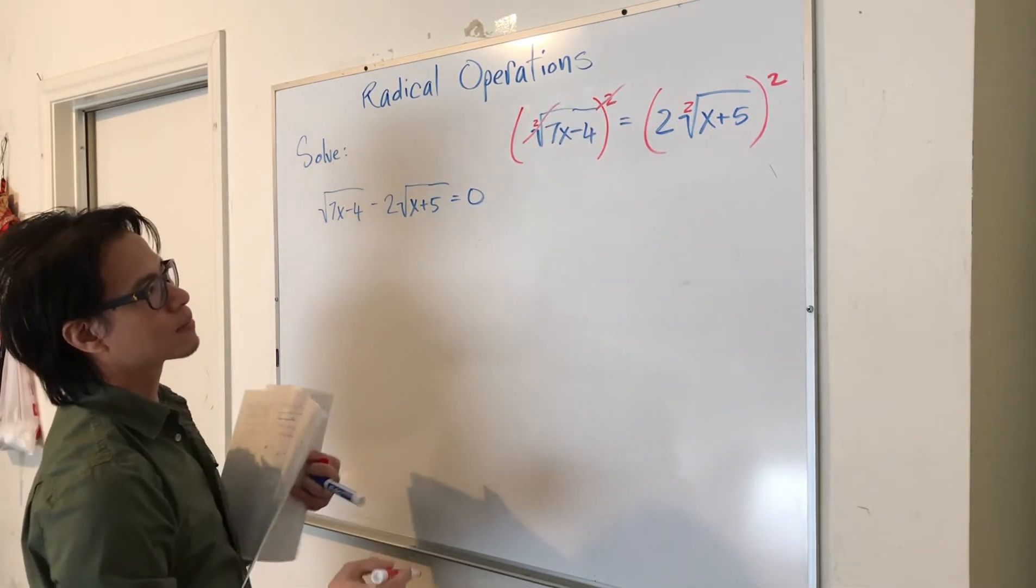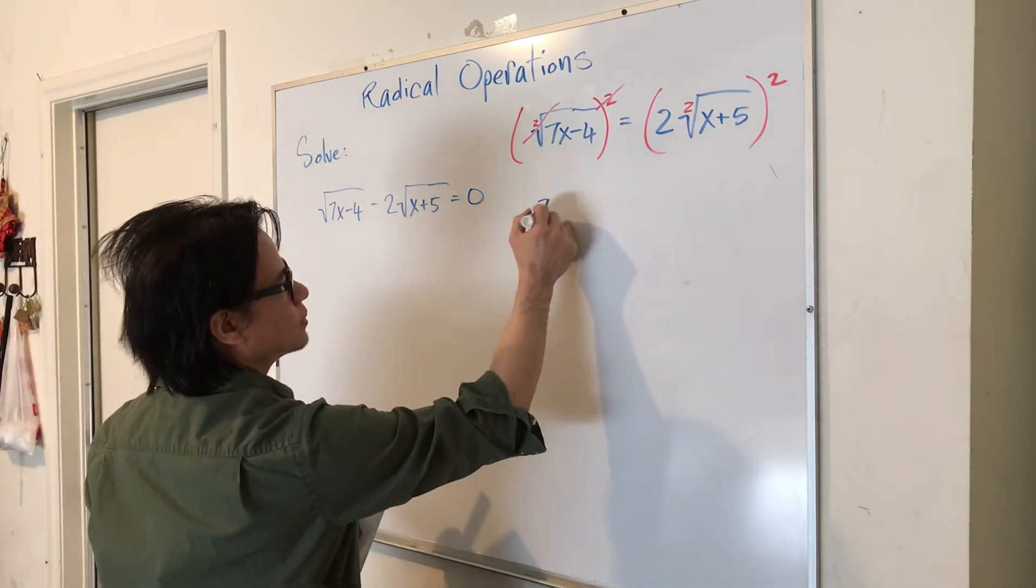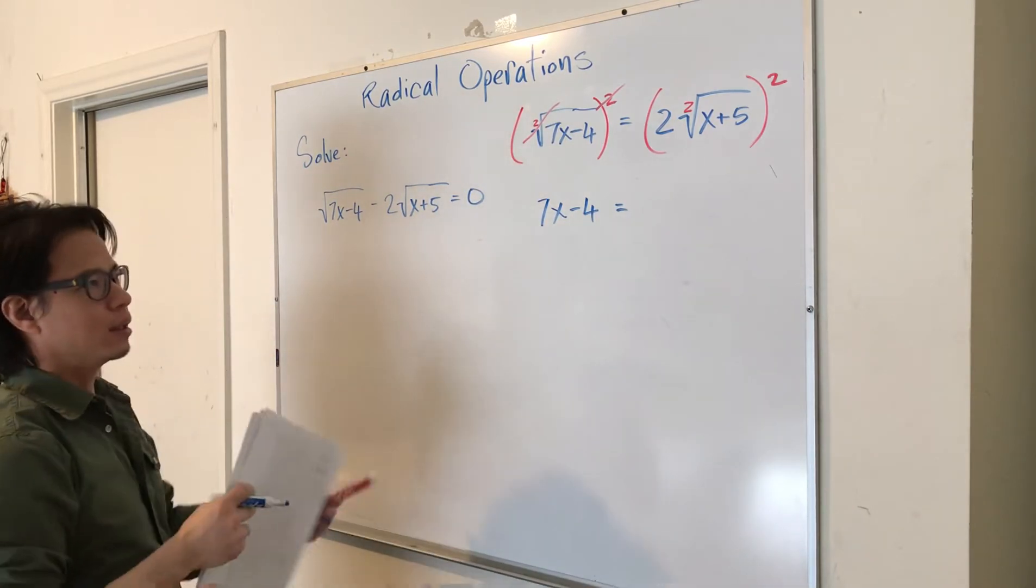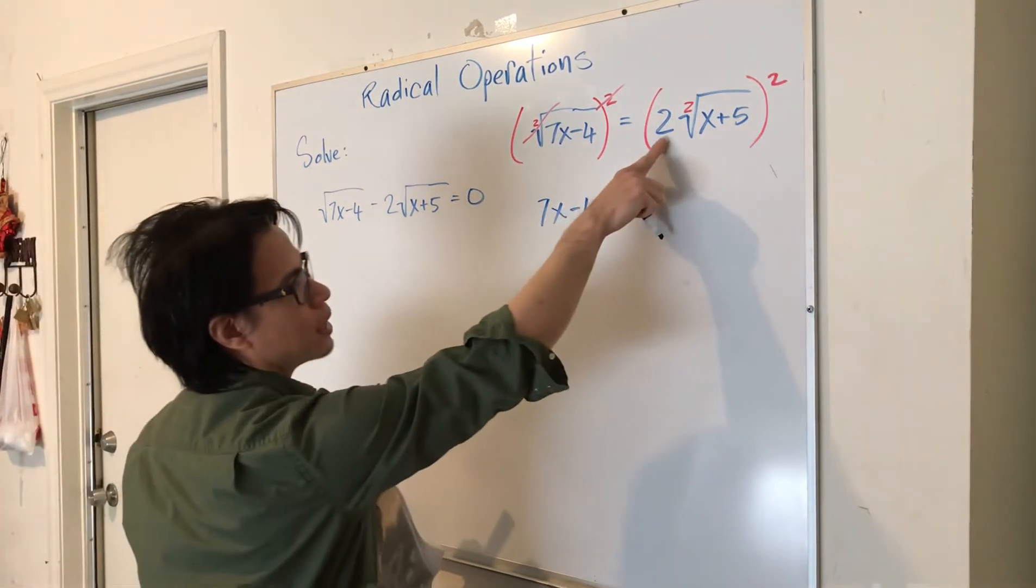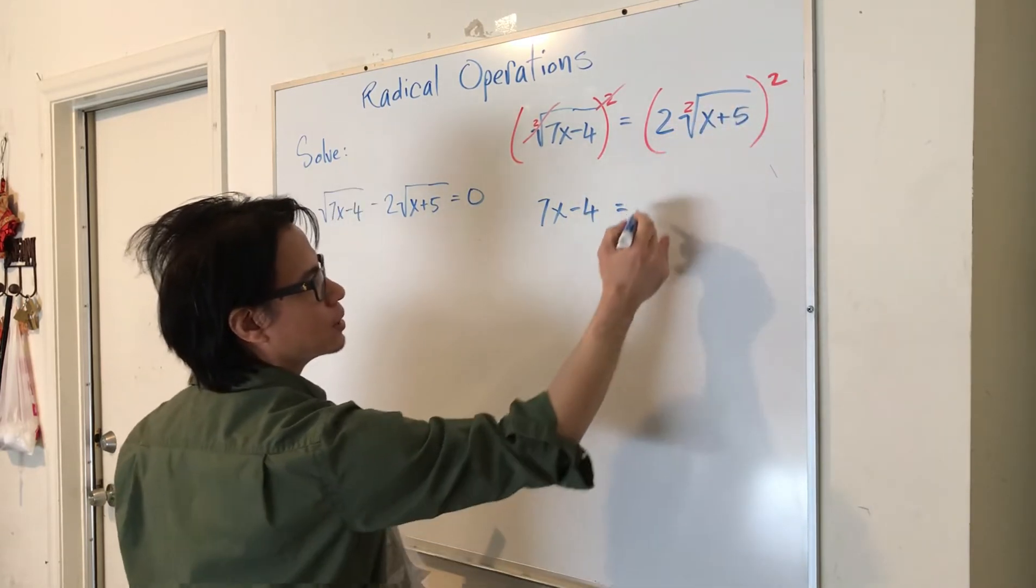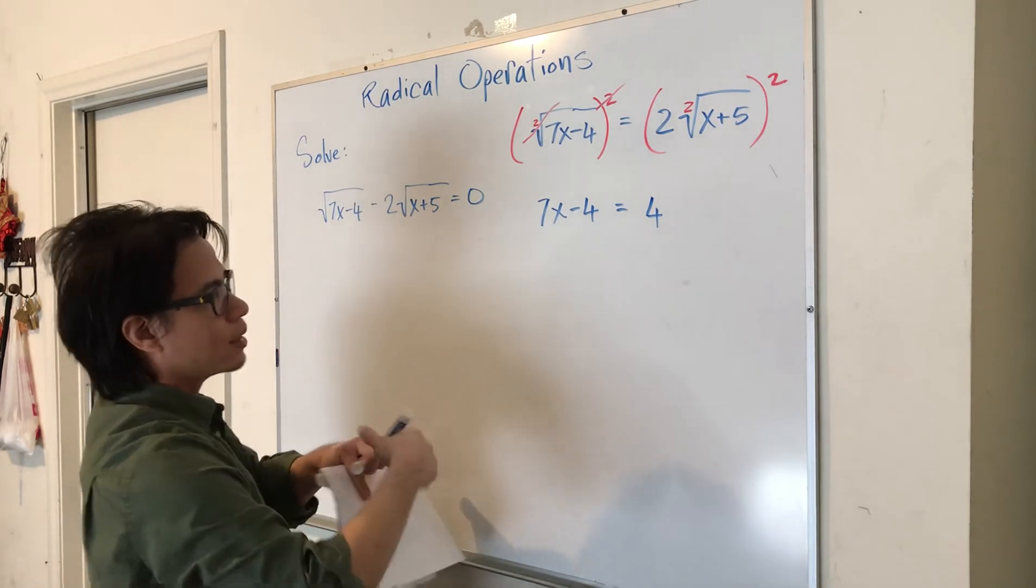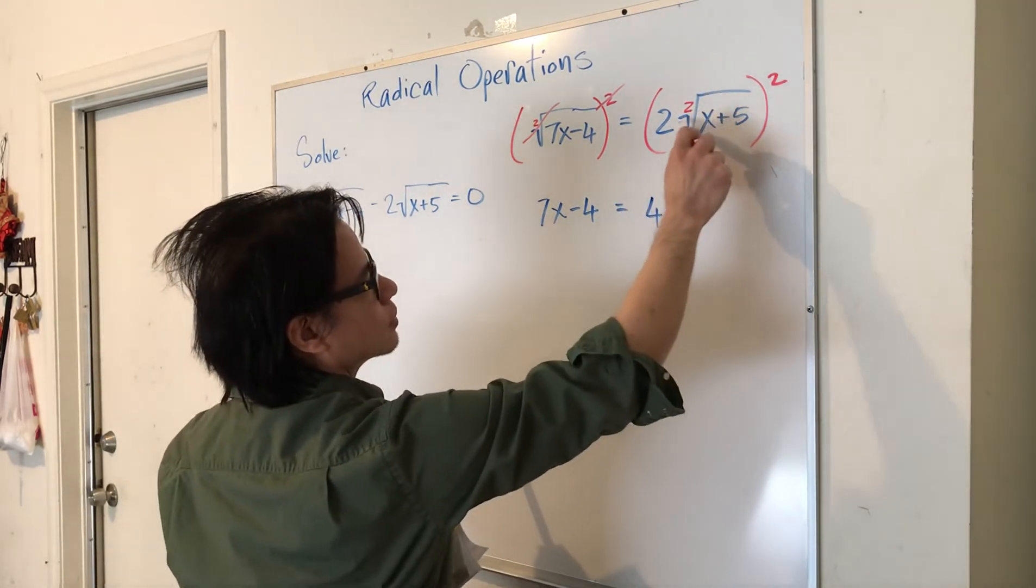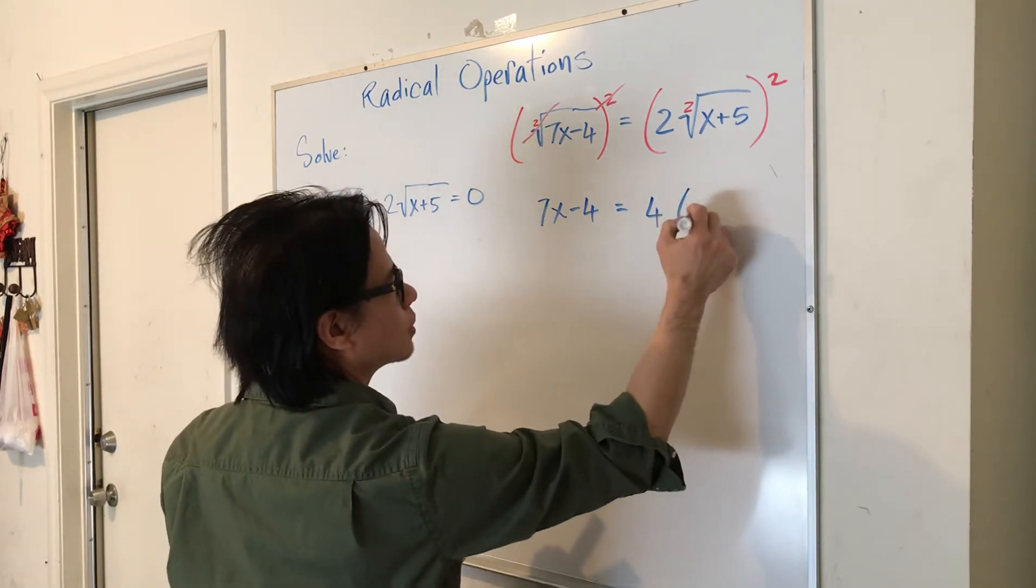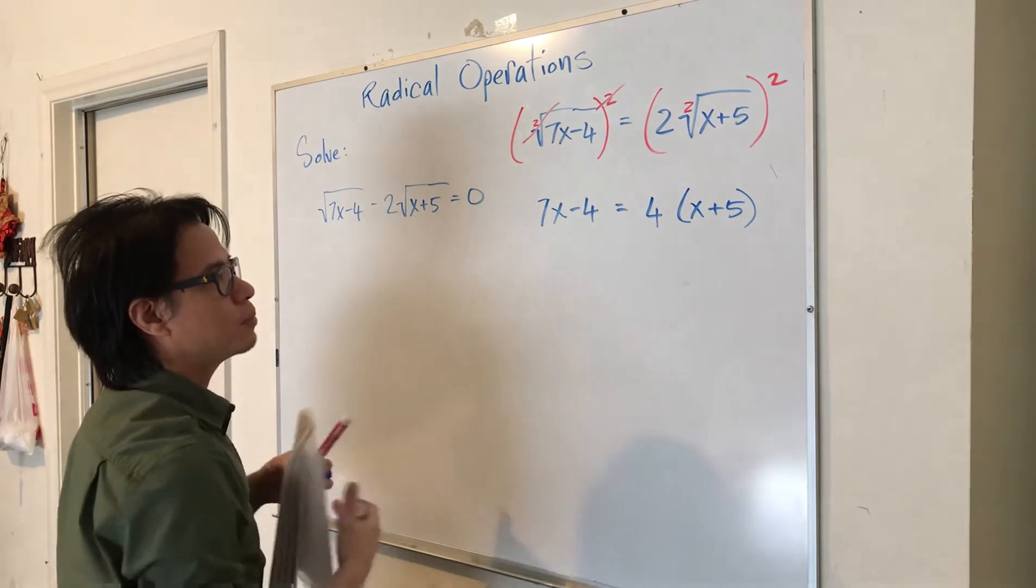And that will leave you with 7X minus 4 on the left. Now on the right here you have a constant term which is a 2, to the second power is 4, and then if you cancel out this radical with the exponent you're going to end up with X plus 5. Remember to put your parentheses here.